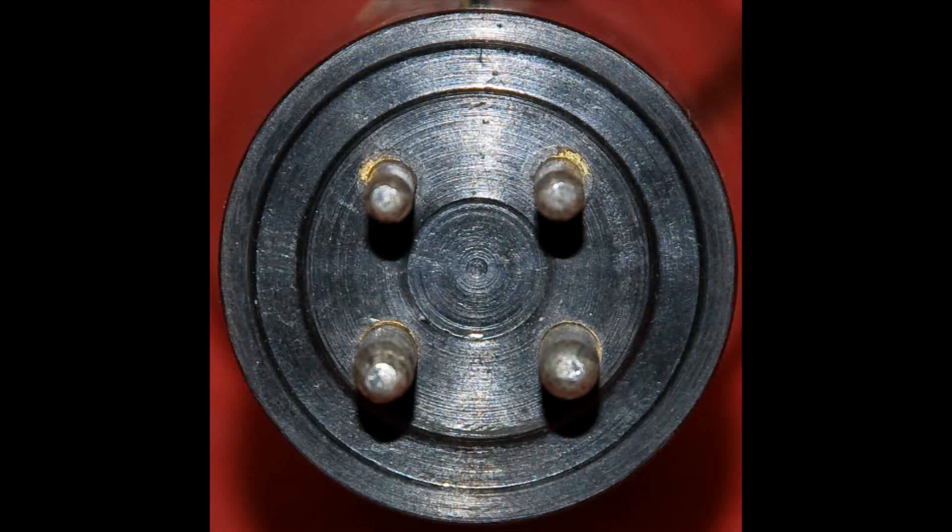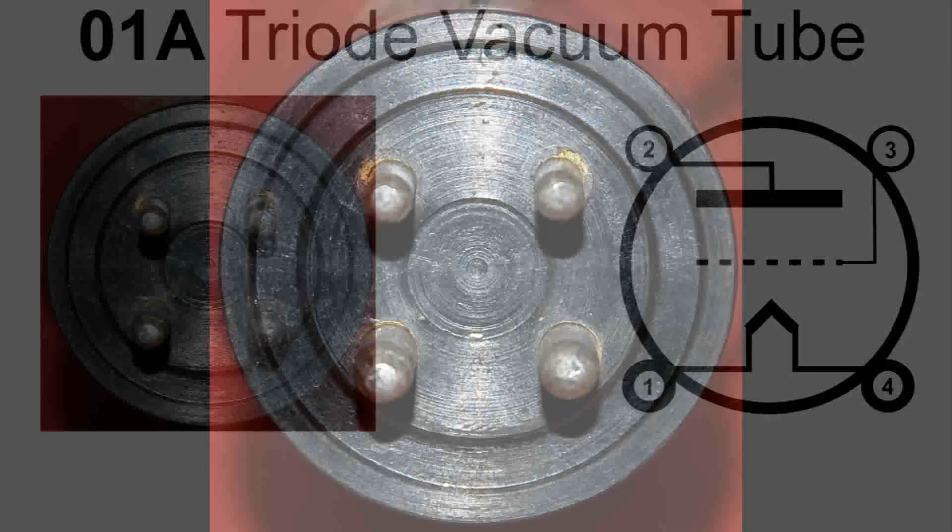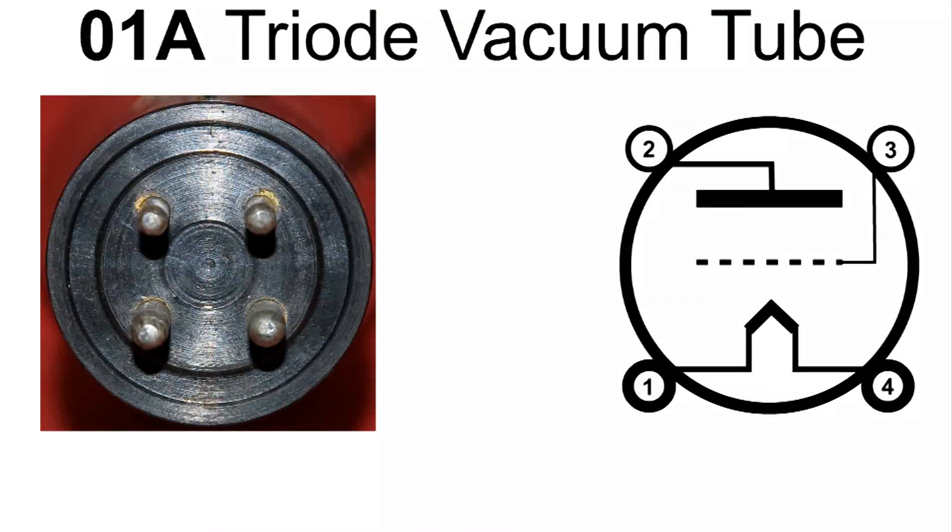And you can see the two large pins at the bottom. Those are for the 5-volt filament. And we have two smaller pins at the top. Now, here's another view, so you can see what the diagram of that vacuum tube looks like.